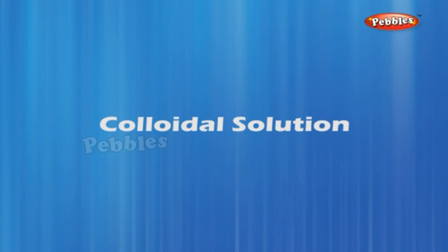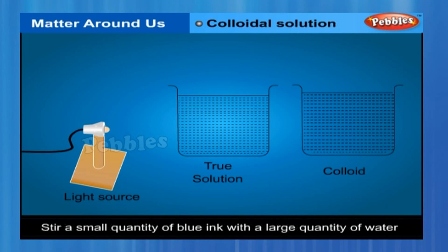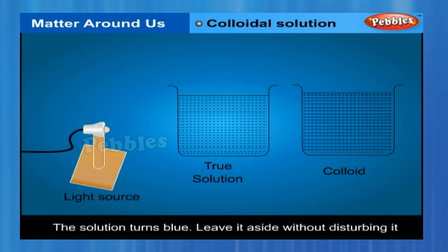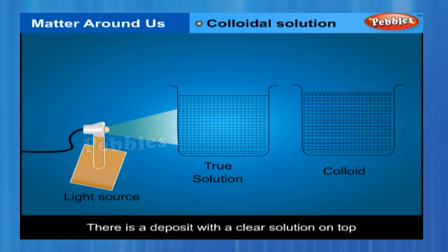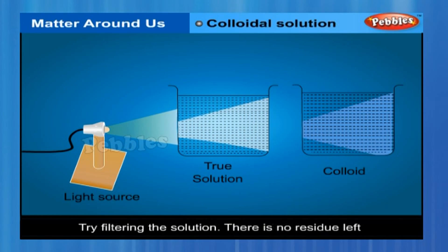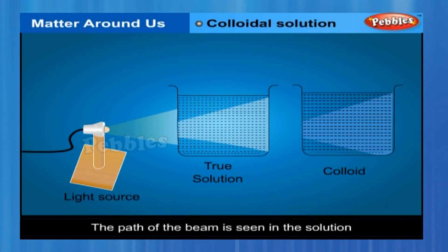Stir a small quantity of blue ink with a large quantity of water. The solution turns blue. Leave it aside without disturbing it. After some time, there is a deposit with a clear solution on top. Try filtering the solution — there is no residue left. Send a beam of light from a torchlight through the solution. The path of the beam is seen in the solution. Ink is an example of a colloidal solution.